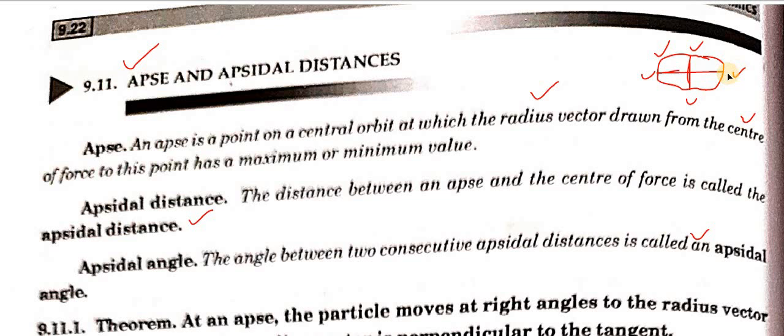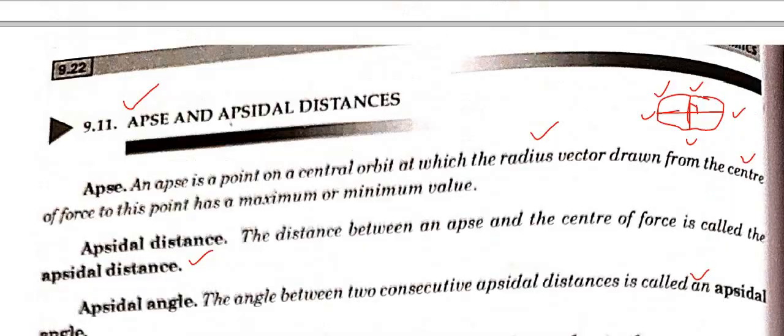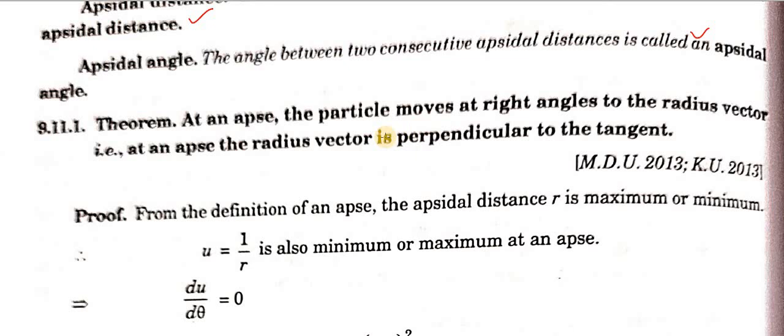The two consecutive apsidal distances form the apsidal angle between them. Having defined these three terms, we discuss the theorem: to attend an apse, the particle moves at right angles to the radius vector. We will prove that at an apse the particle moves at right angles to the radius vector, and we will prove what happens to the apsidal distance — where distance is maximum and where it is minimum.